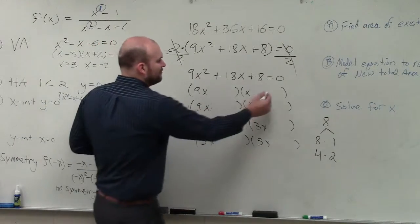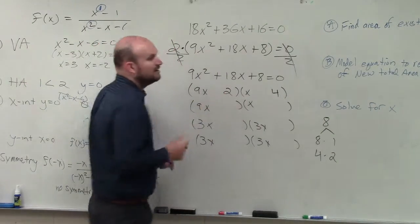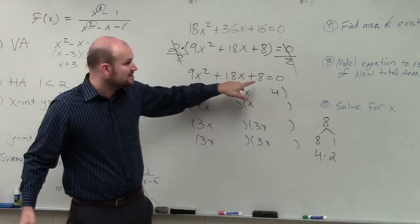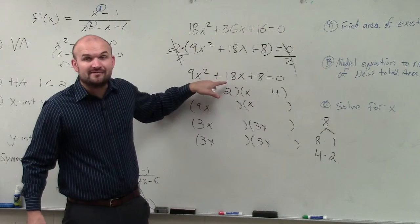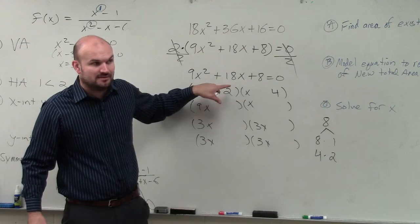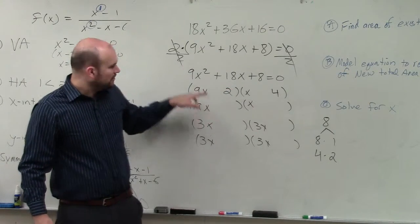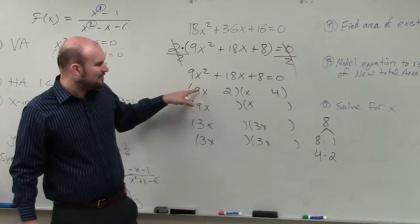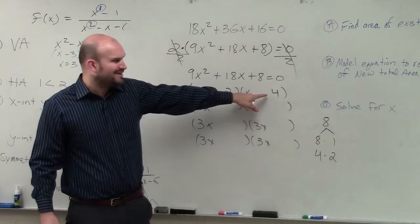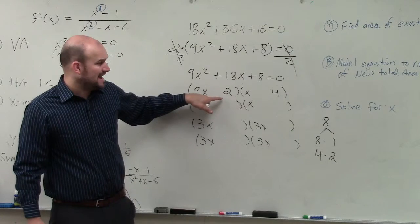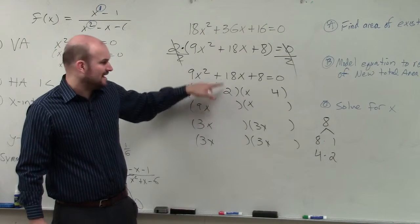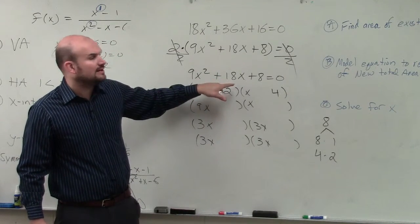Now, if I put a 4 here and a 2 here, first of all, remember, these two numbers, since they're going to multiply to give me a positive 8, and they're going to add to give me a positive, I know that they all have to be positive, right? So when I multiply, if I do a 9 times a 4, that's going to give me 36. 2 times x is going to give me 2. That's going to give me 38. I need to get to 18. That's way too big, right? Everybody agree with me?